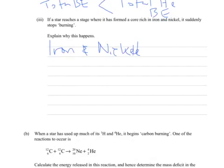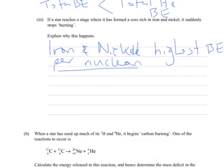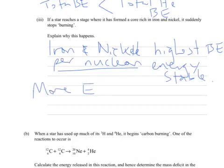That happens because iron and nickel have the highest binding energy per nucleon, not total. The highest binding energy per nucleon. That makes them the most energetically stable.